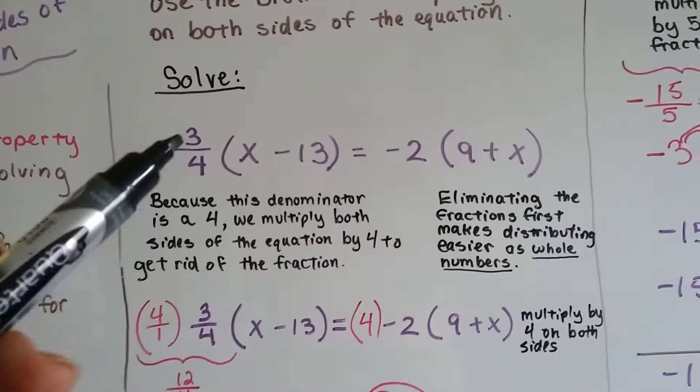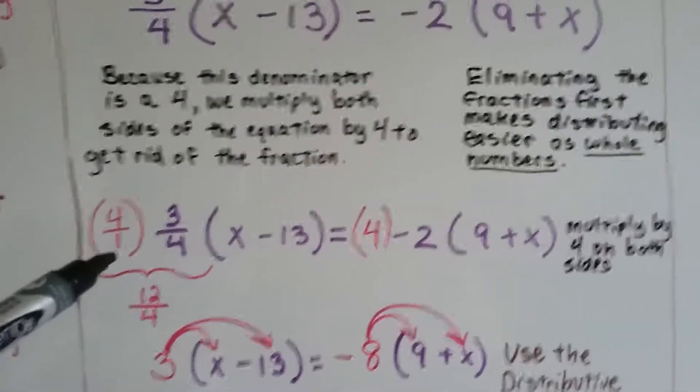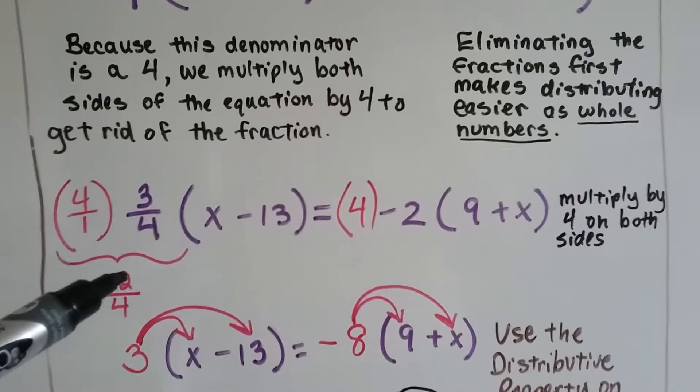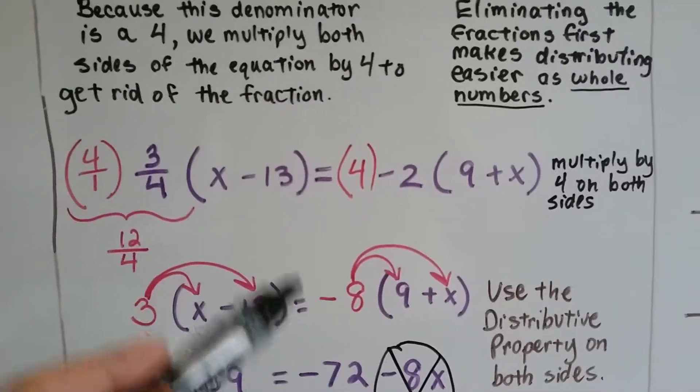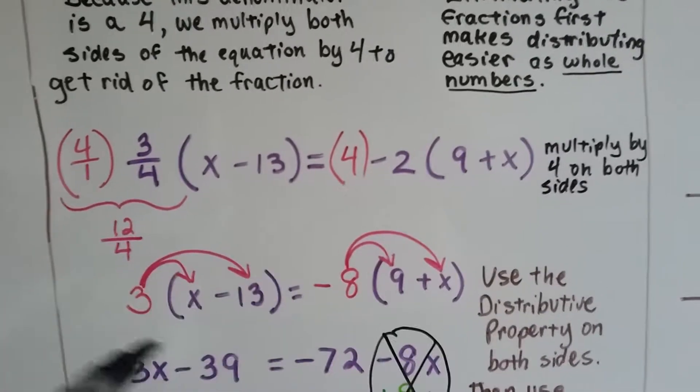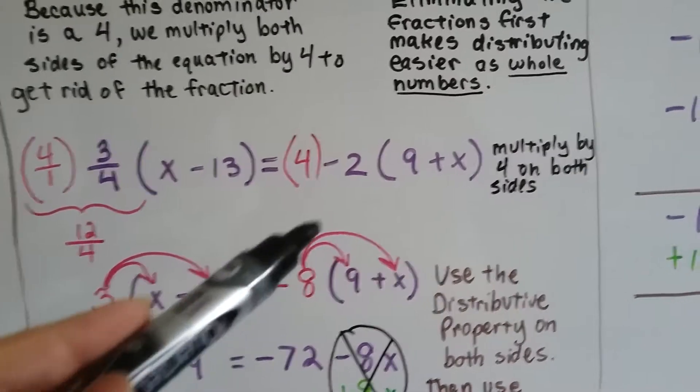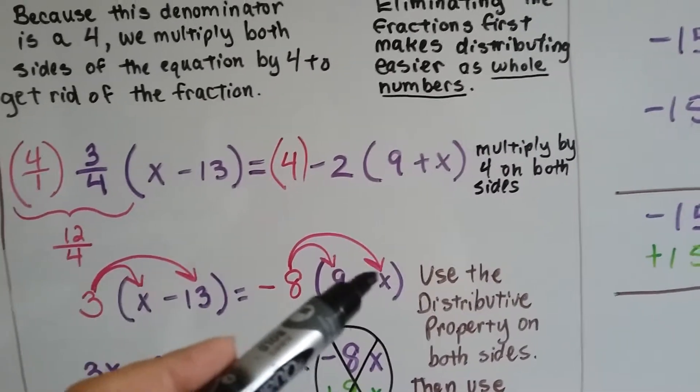We're going to multiply both sides by 4. Because this is a fraction, I made it easier by writing this as 4 over 1. 4 times 3 is 12, and 1 times 4 is 4. 12 over 4 is 3. So now that's what the left side of the equation looks like. Positive 4 times negative 2 makes negative 8, and we drop down our 9 plus x.